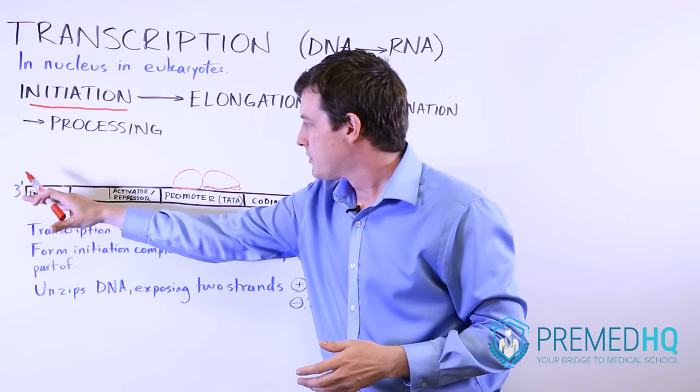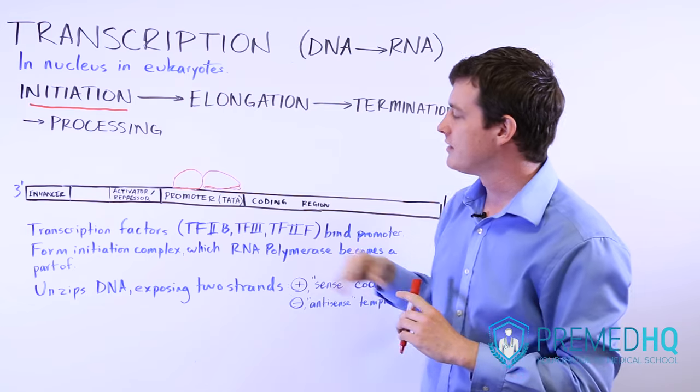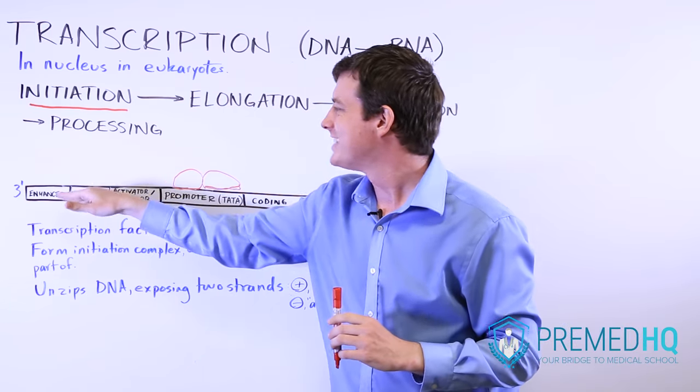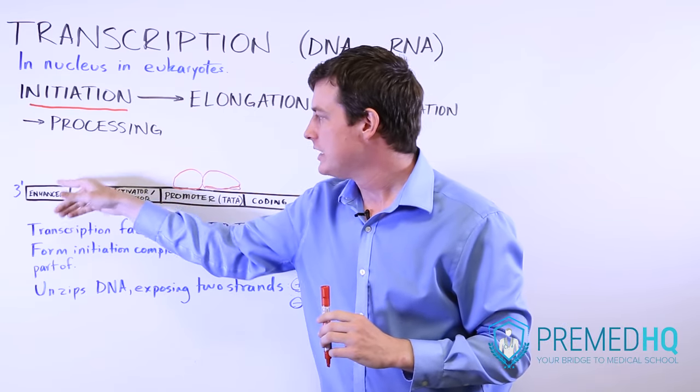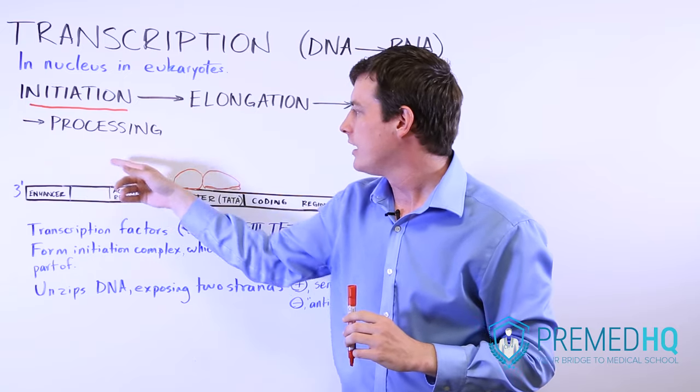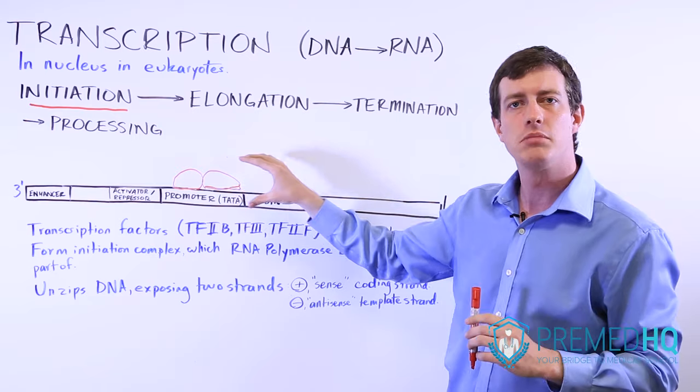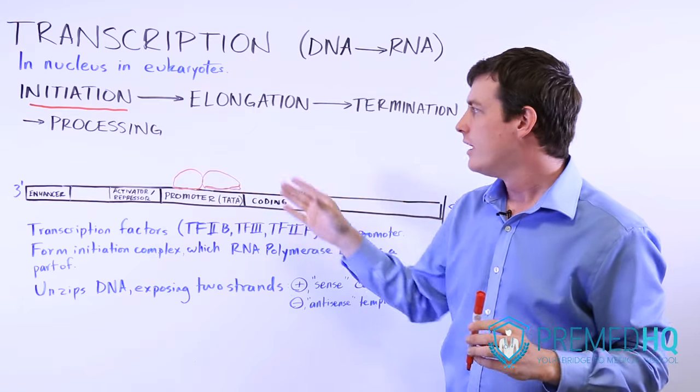Further upstream of that is going to be the enhancer region. And an enhancer is something that's not directly next to the promoter, but it is another thing that proteins can bind to. And in that process, that can then increase the likelihood that you'll form an initiation complex and begin the process of transcription.